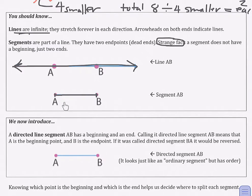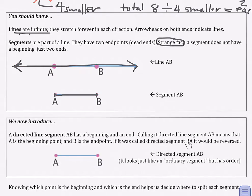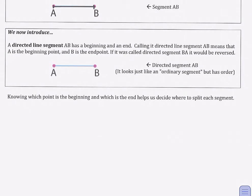Today's new vocabulary word will be a directed line segment. A directed line segment looks exactly the same as a regular segment. The only difference is, if it's called a directed line segment — in this case AB — that means that A is actually the beginning and B is the end. The order of the letters in its name tells you what the beginning is and what the end is. For example, if it was called directed line segment BA, then B would be the start and A would be the end. This understood order will actually help us determine where to break these segments up.